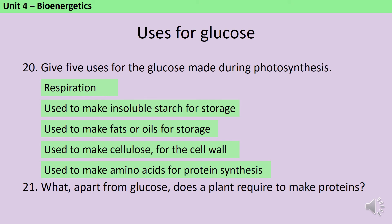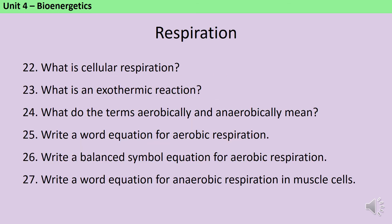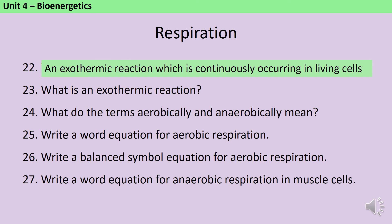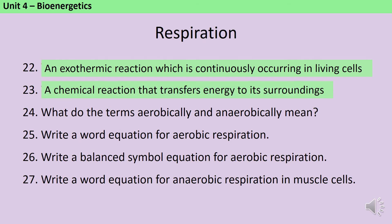Apart from the glucose, the plant needs nitrate ions to make proteins. Your specification says that cellular respiration is an exothermic reaction which is continuously occurring in living cells. Exothermic reactions are those that transfer energy to their surroundings. Aerobically means using oxygen, whereas anaerobically is without oxygen.